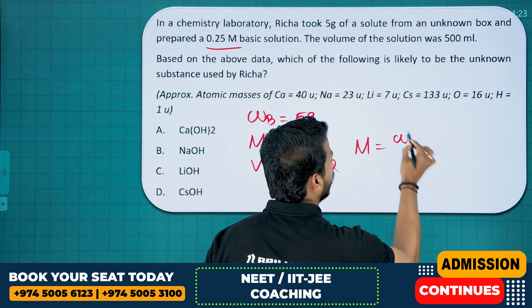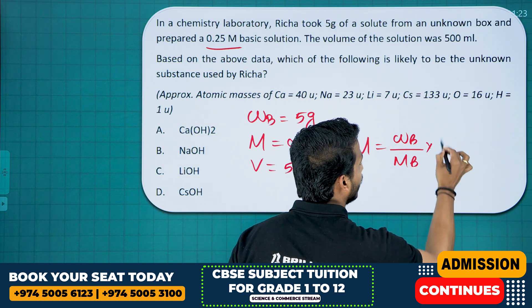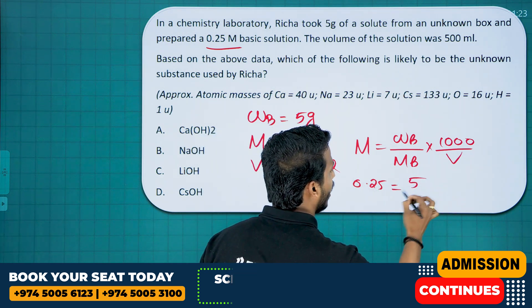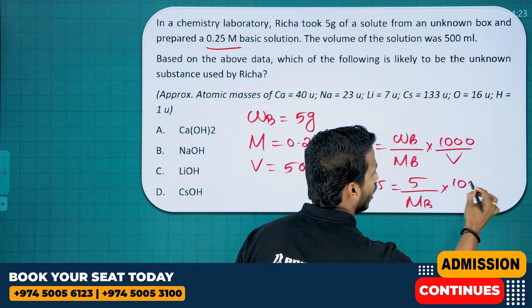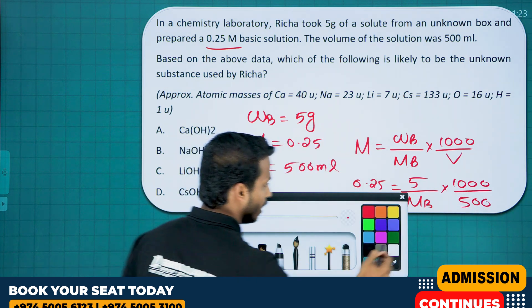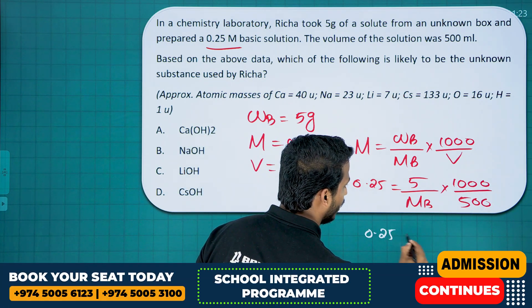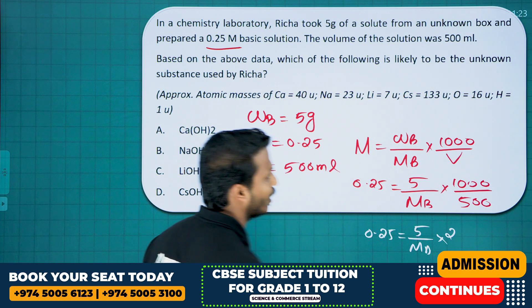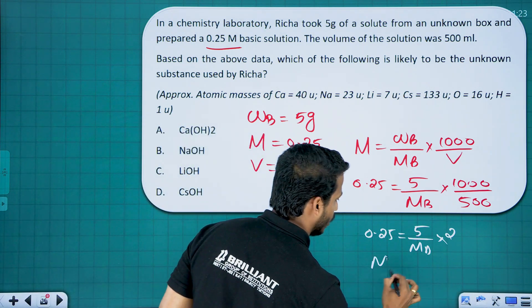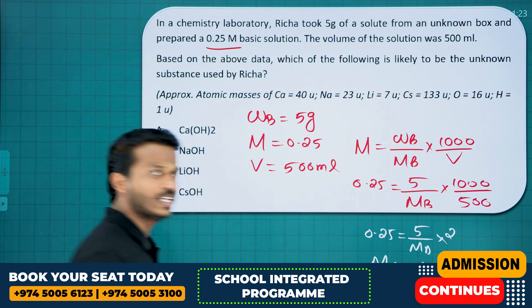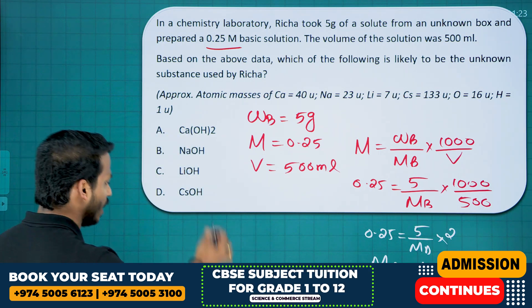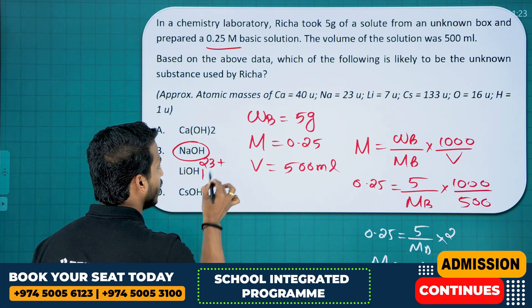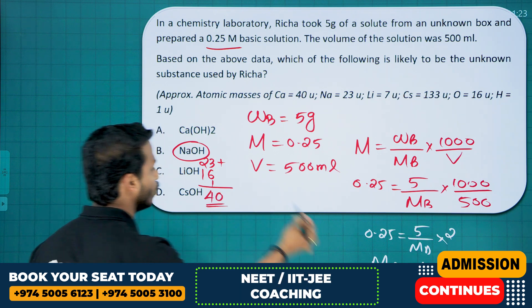Molarity = WB / MB × 1000 / volume. Substituting: 0.25 = 5 / MB × 1000 / 500, which gives 0.25 = 10 / MB, so MB = 40. A molar mass of 40 corresponds to NaOH — sodium (23) + oxygen (16) + hydrogen (1) = 40. So molarity-based questions like this from the beginning part, please don't miss.